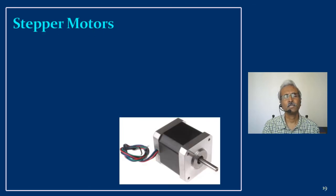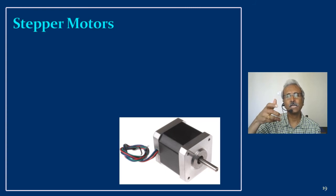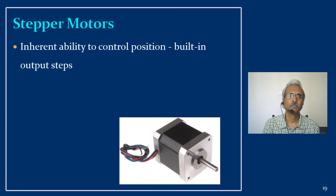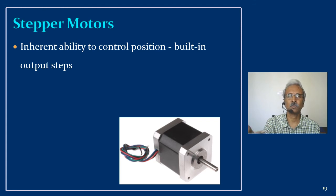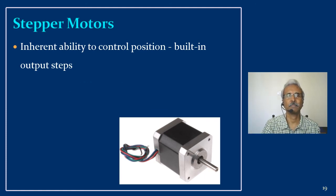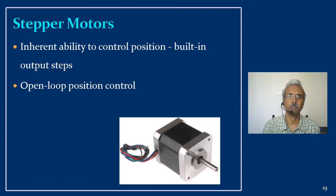Stepper motors — technically called stepping motors — differ from normal motors that run continuously. When excited, a stepper motor moves in steps; how much angle per step depends on the motor design. The stepper motor has an inherent ability to control position through built-in output steps. Whereas a servo motor requires precise excitation pulses to rotate through a certain angle, the stepper motor itself moves in steps making angle control very easy. One drawback is open-loop position control with no feedback.